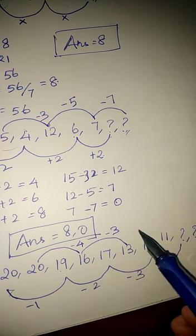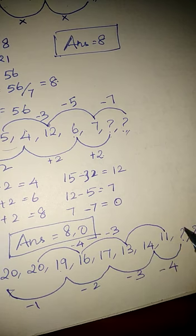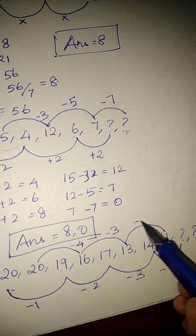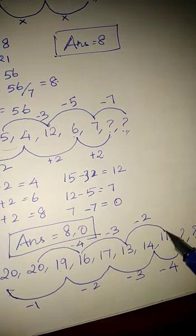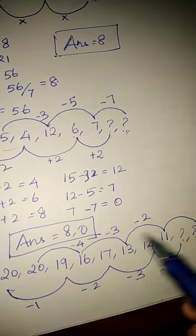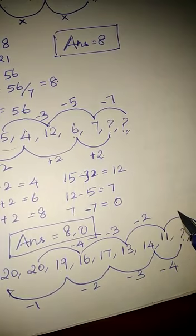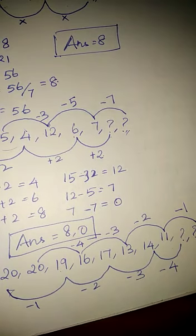Then here 13 minus 3. Here 13 minus 3 minus 2 gets 11. Then what will come next? Minus 4, minus 3, minus 2, then minus 1. Can you get it? Yes. Here in increasing order, here in decreasing order, the same one but in reversal.